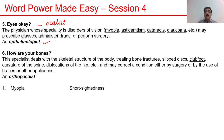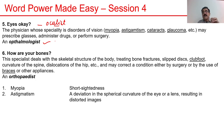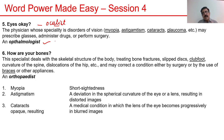Myopia is short-sightedness. Astigmatism is a deviation in the spherical curvature of the eye or lens, resulting in distorted images. Cataracts are a medical condition in which the lens of the eye becomes progressively opaque, resulting in blurred vision — doctors perform a cataract operation to remove it, after which vision becomes clearer. Without treatment, vision in cataracts appears blurry and cloudy.